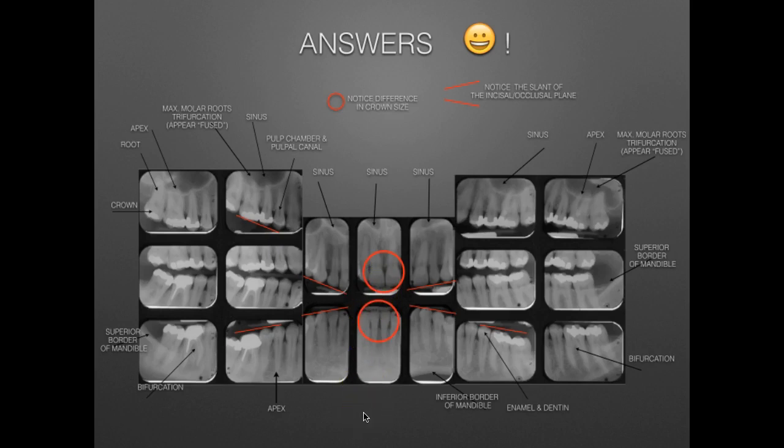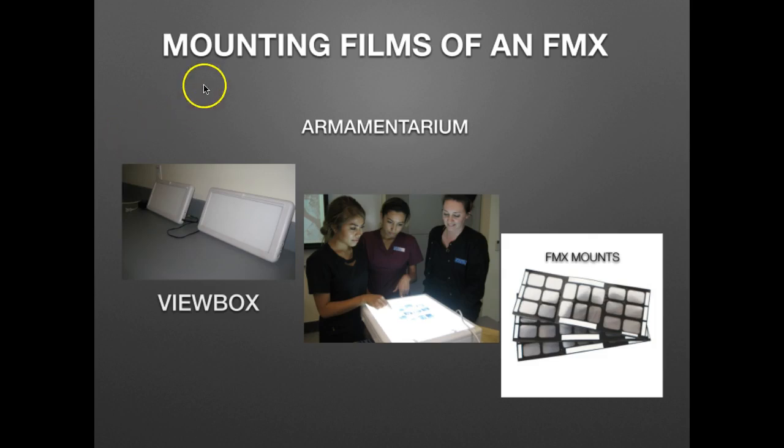These anatomic structures are going to be very helpful in film mounting. If you're working with film in a dental office, or in a dental assisting program, it's very important to learn all the anatomical structures in a specific dental image so that you can mount them quickly and anatomically correctly. This is very important because when a dentist looks at radiographic film, they are counting on you to have mounted them correctly so there are no mistakes in a patient's diagnosis. Let's look at mounting films of an FMX and the armamentarium needed to achieve this skill.